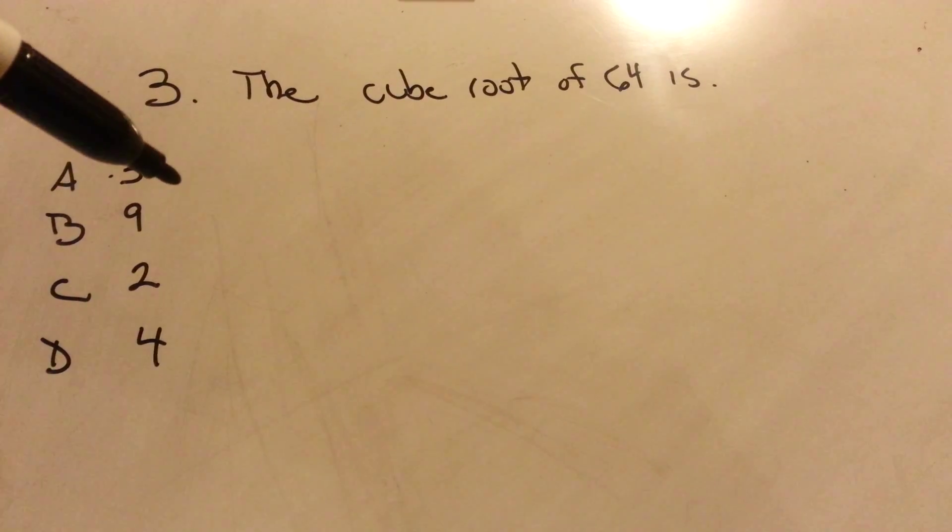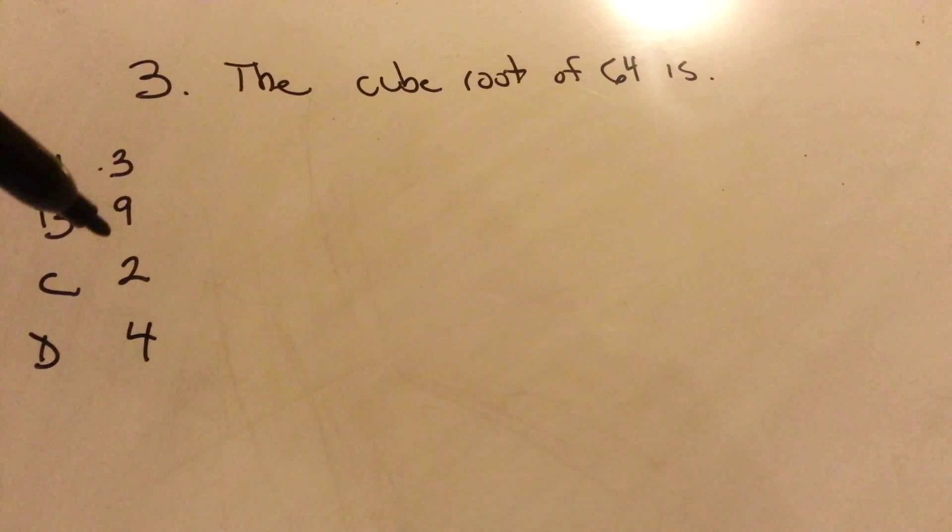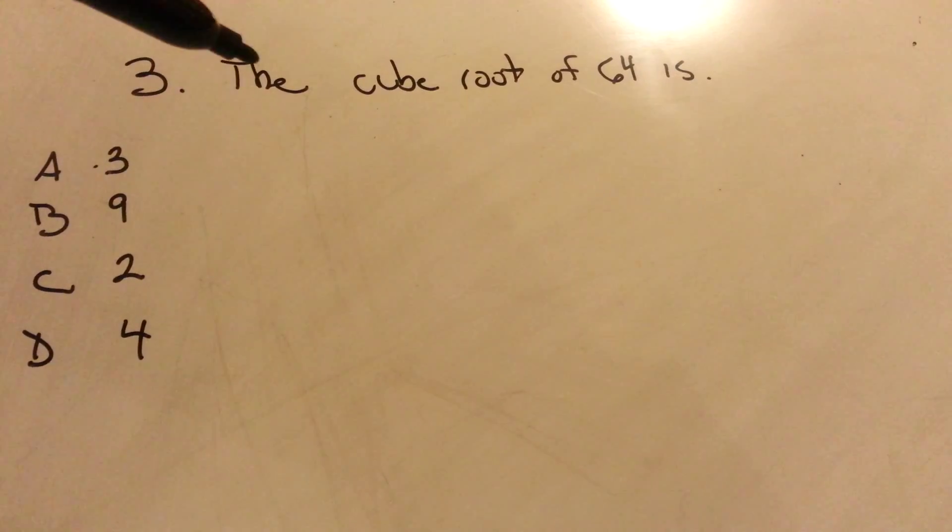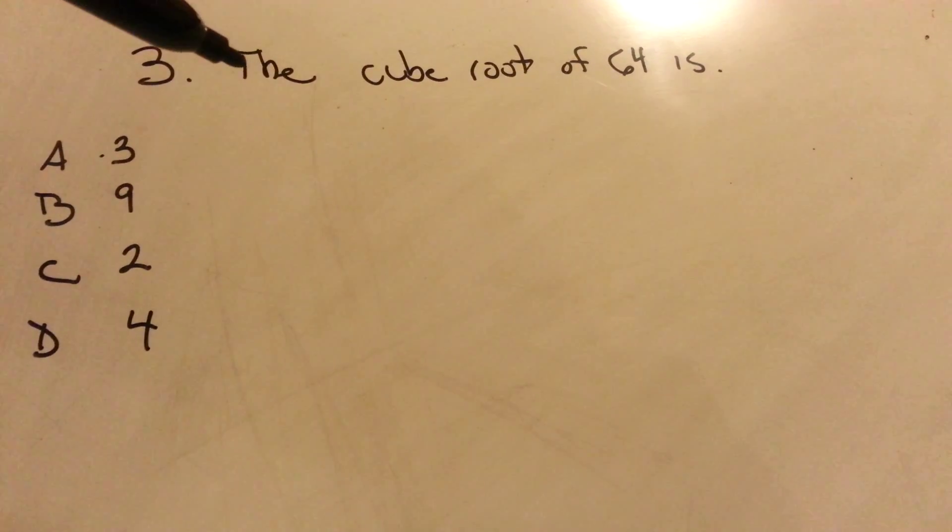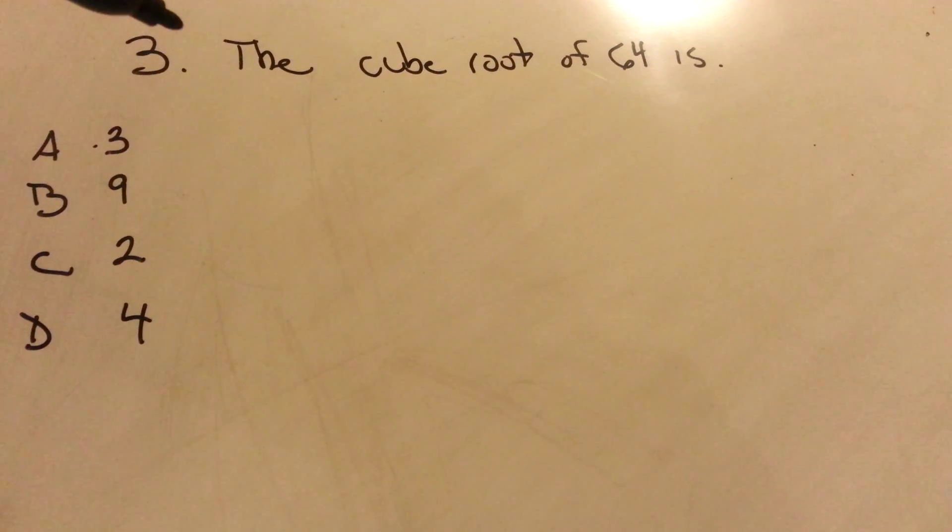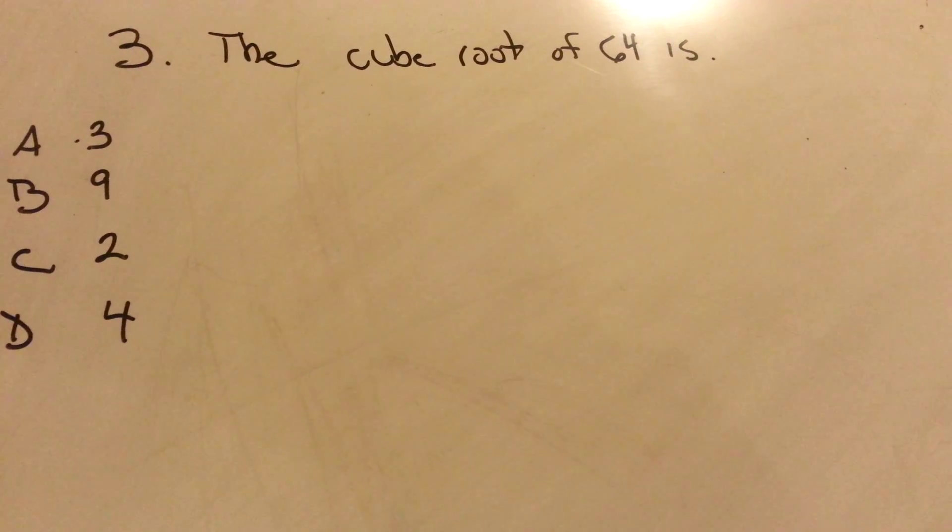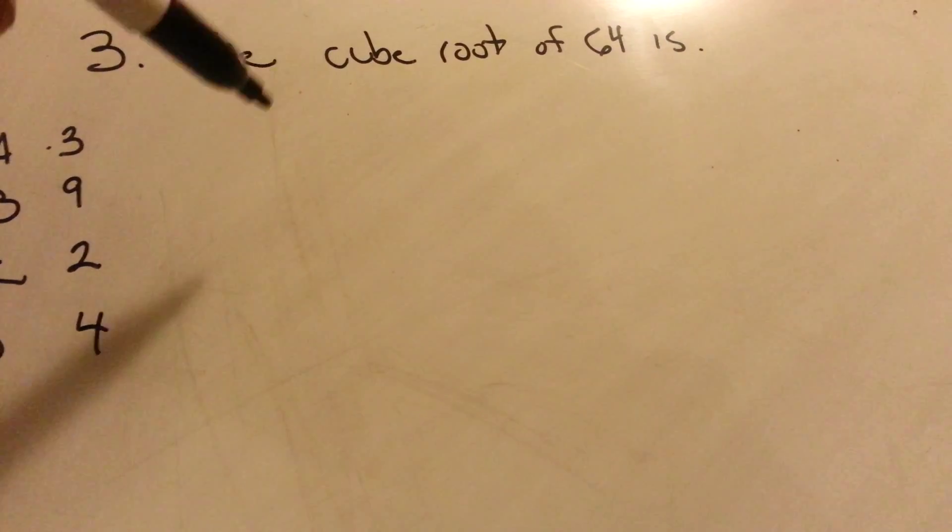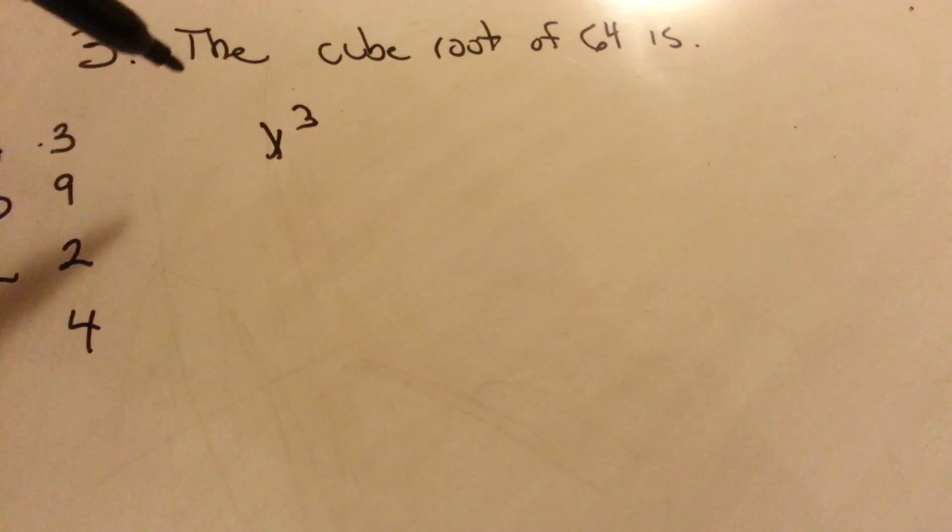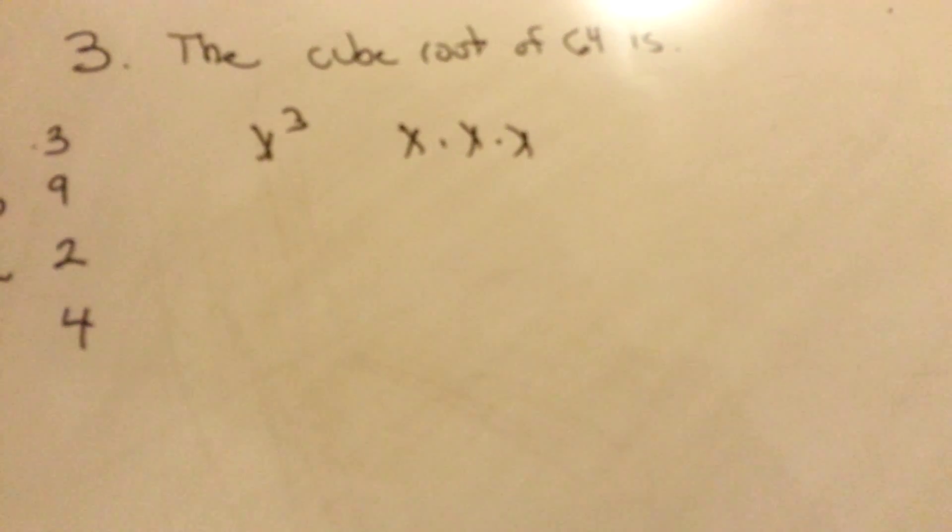The first way, we can do guess and test. The cube root, for those that don't know, basically means something to the third power, which means something times itself three times. So X to the third power, or X times itself three times.